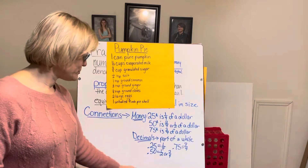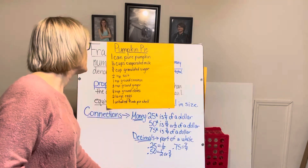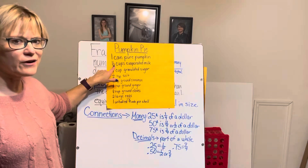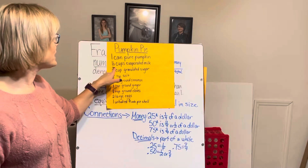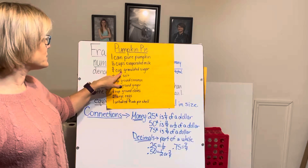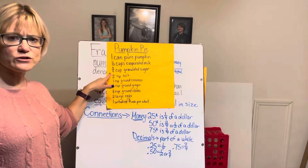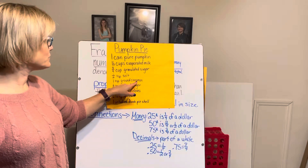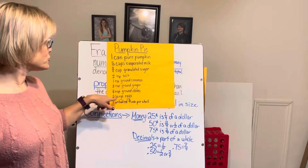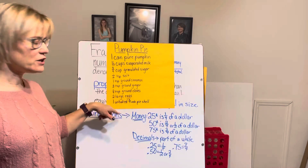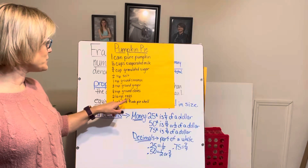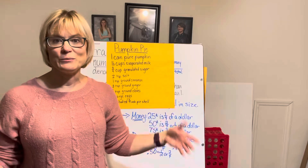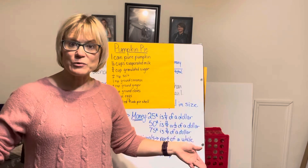So we've got one can of pureed pumpkin, one and a half cups of evaporated milk — now if you look at that, you've got a whole number and a fraction, which is called a mixed number. Three-quarters cup of granulated sugar — I call this quarters, but you can also read it three-fourths. One-half teaspoon of salt, one teaspoon of ground cinnamon, half a teaspoon of ground ginger, one-fourth of a teaspoon of ground cloves, two large eggs, and one unbaked nine-inch pie shell. That's all the stuff you need to make grandma's pumpkin pie.